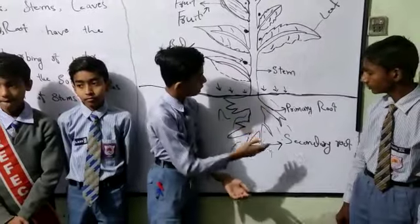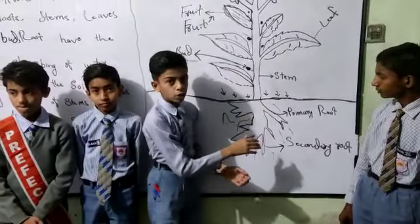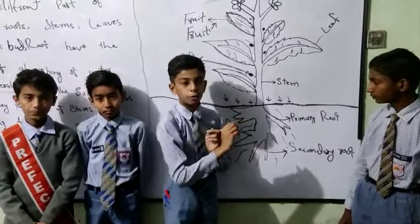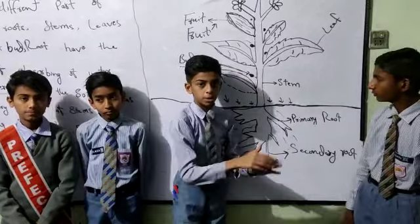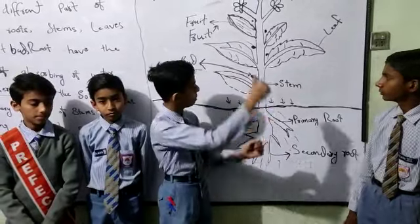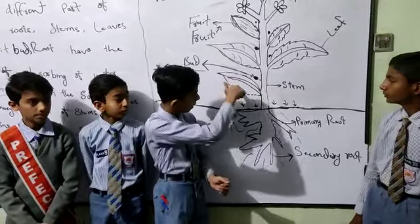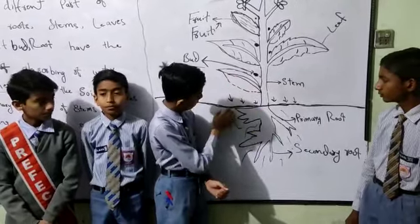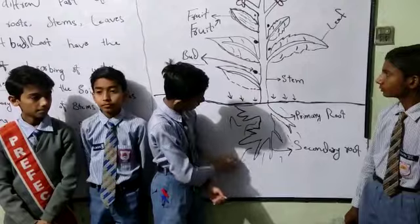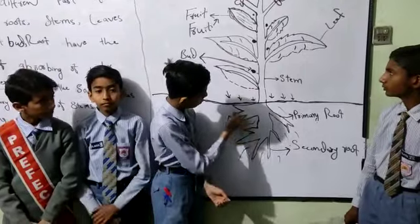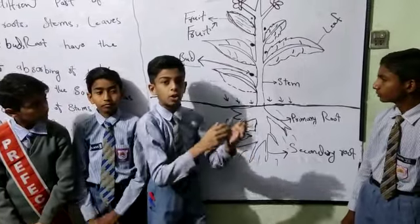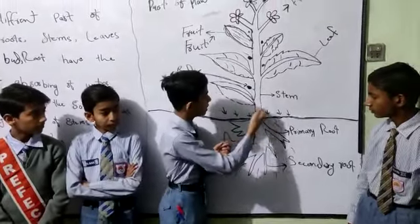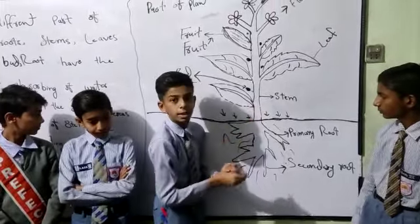The first function of the root is the absorption of water and minerals from the soil. We give water to our plant through the roots. Thank you.